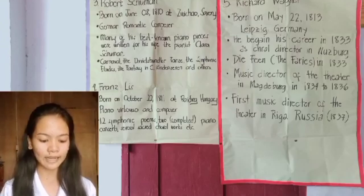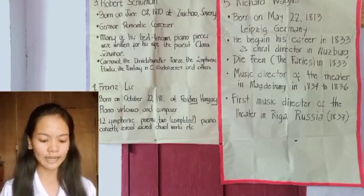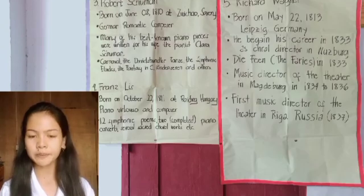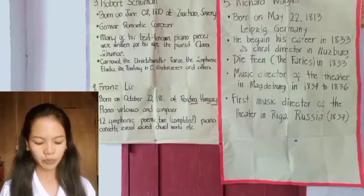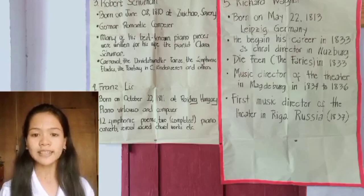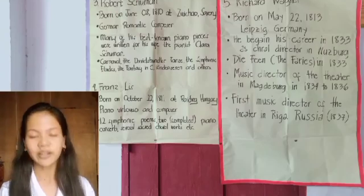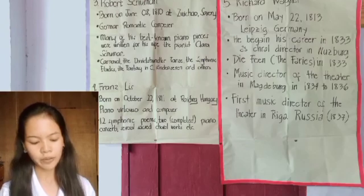Franz Liszt was a Hungarian composer born on October 22, 1811 in Raiding, Hungary. He was a pianist and teacher of the Romantic period with a diverse body of work spanning more than six decades. He is considered one of the most prolific and influential composers of his era and remains one of the most popular composers in modern concert piano repertoire. He died on July 31, 1886 in Bayreuth, Germany at the age of 74.